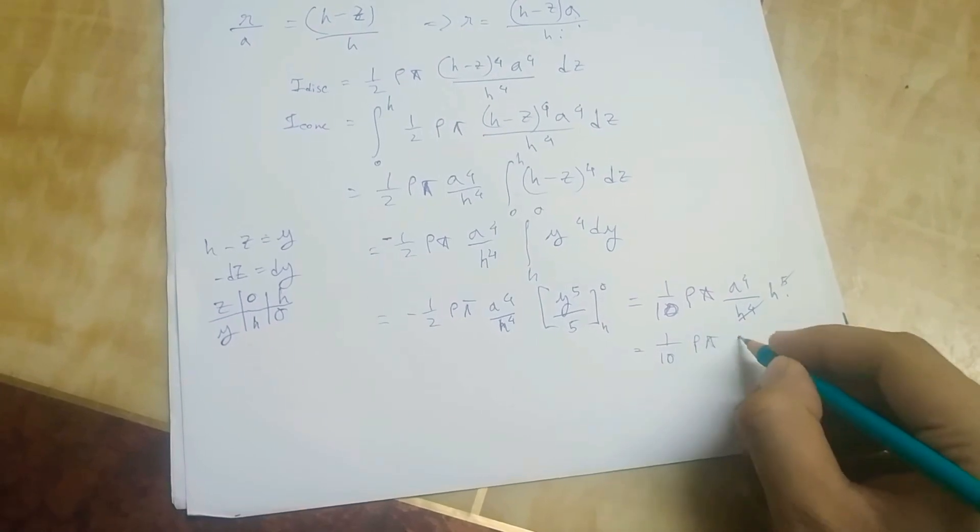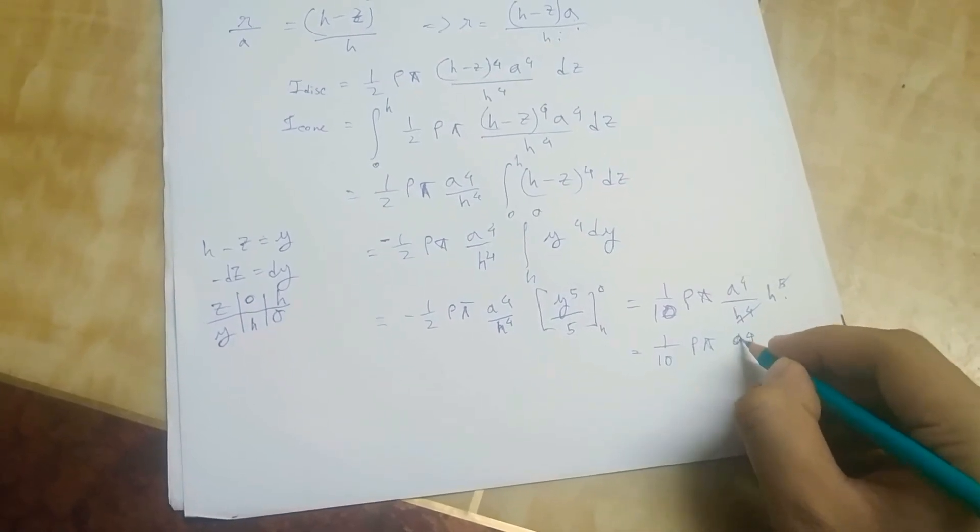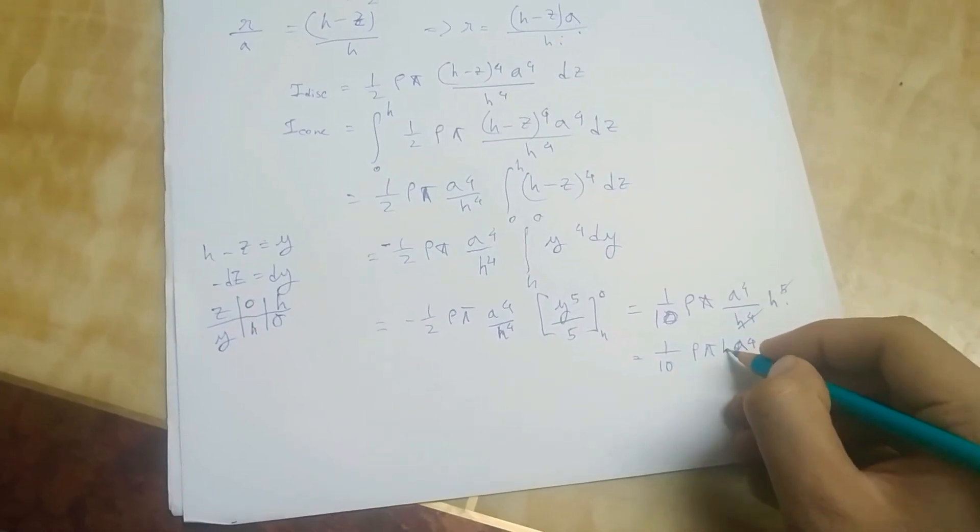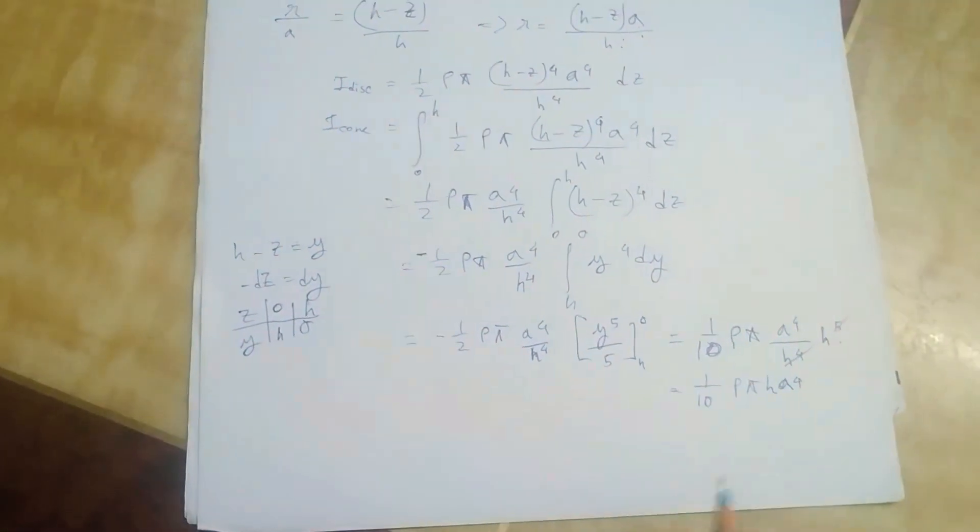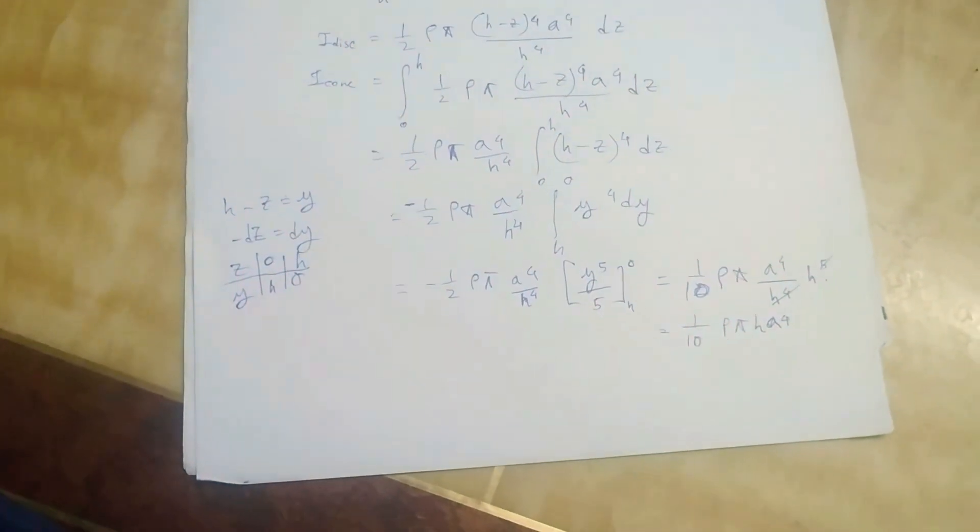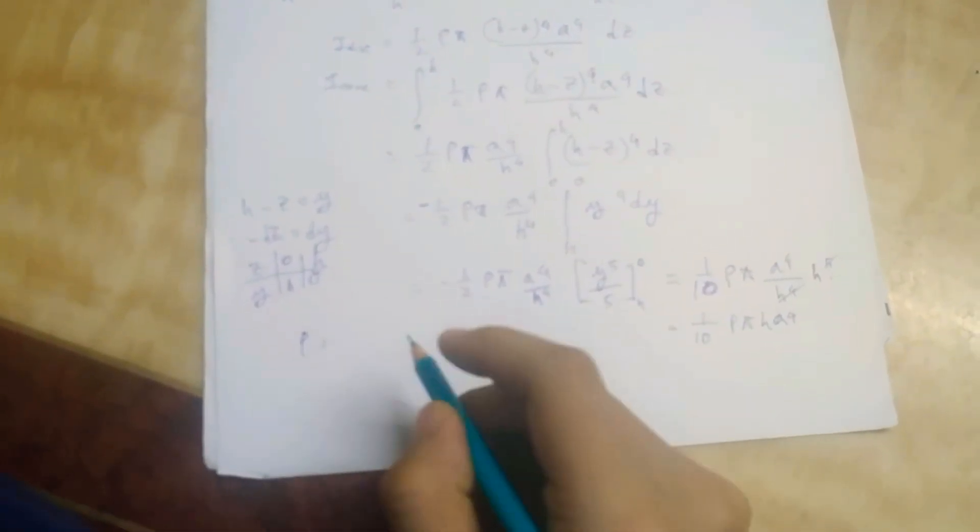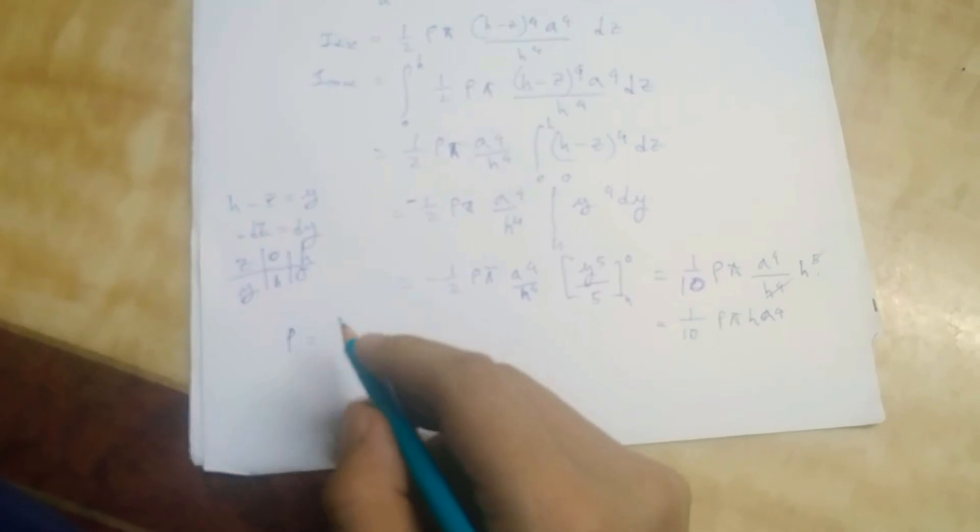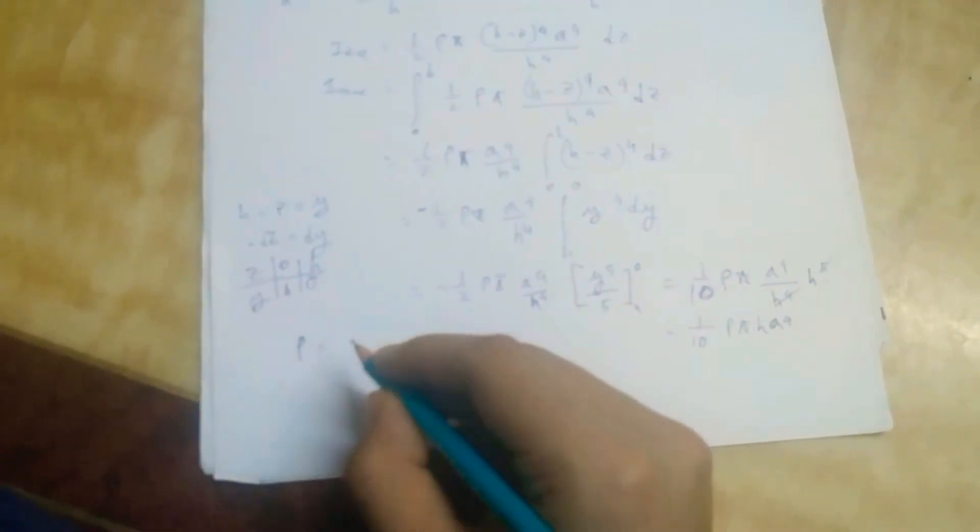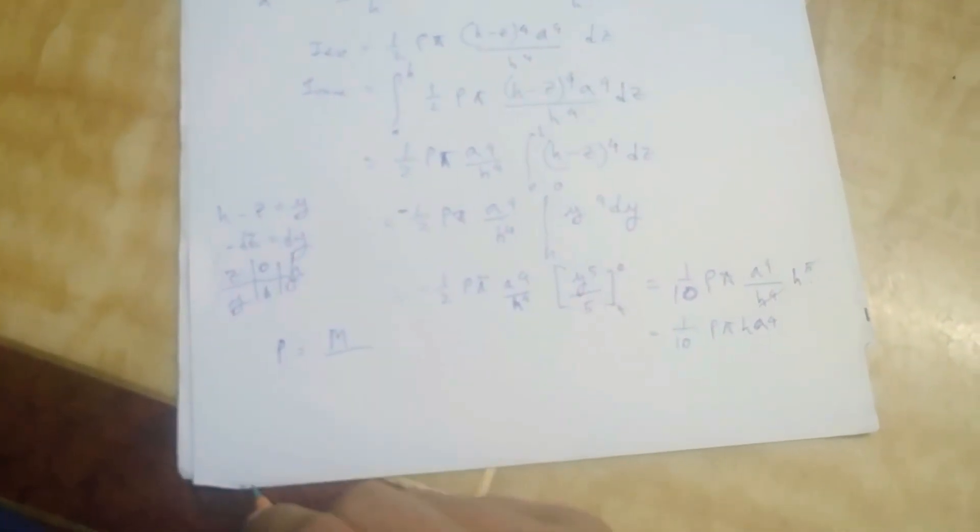Now if we simplify that we'll get something like this. Now I have to understand that rho, rho was mass per unit volume. Now this is also mass per unit volume but for the cone. So the total mass of the cone will be m.